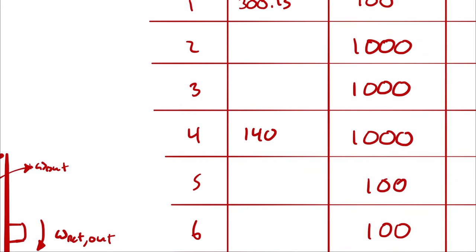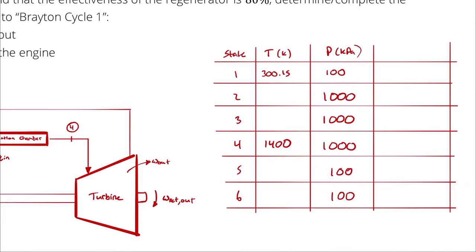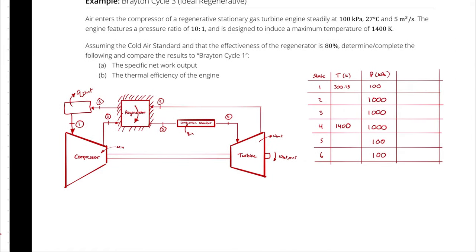Remember, it's always hottest after the fire happens. We can find state points 3 and 6 by analyzing the regenerator, since we know its effectiveness. Going from state 1 to 2 uses the pressure ratio and isentropic ideal gas equations, and going from state 4 to 5 does as well. That should be enough to populate all temperatures, which, because I'm using the cold air standard, is enough to calculate work-in, Q-in, work-out, and Q-out, and therefore net work out and thermal efficiency.